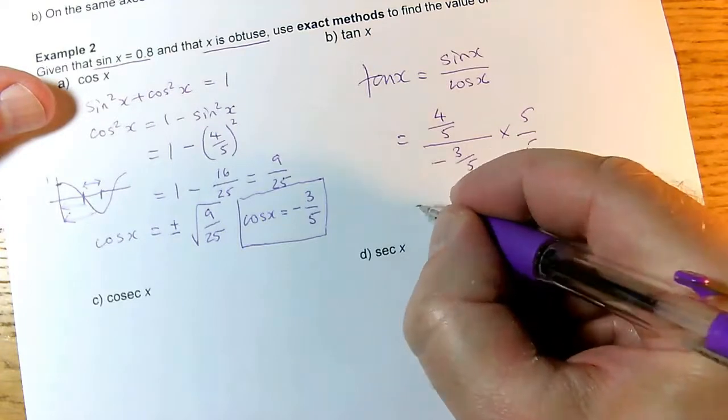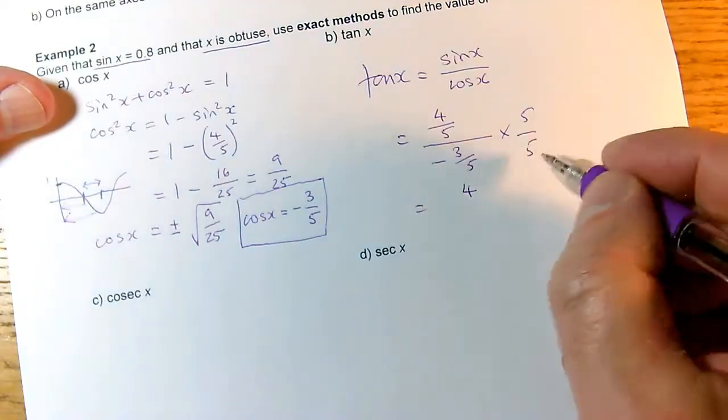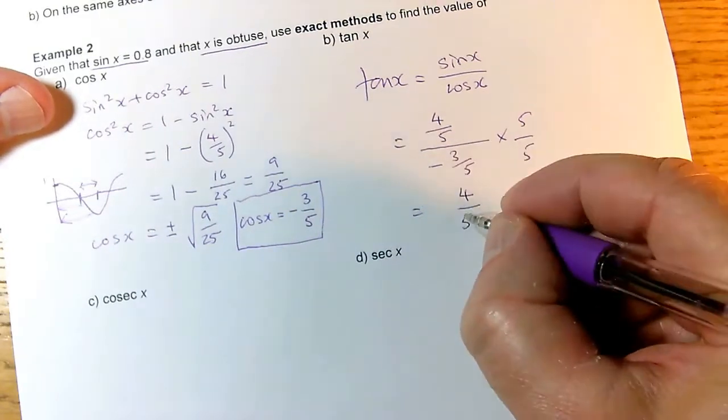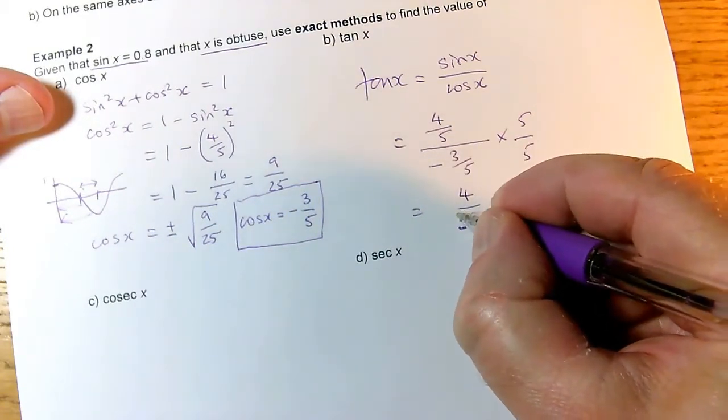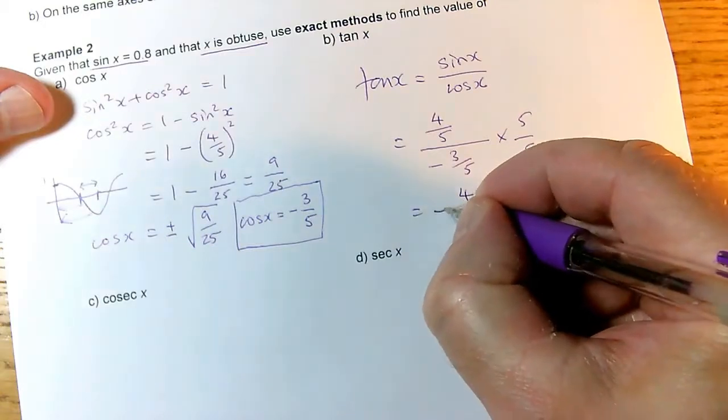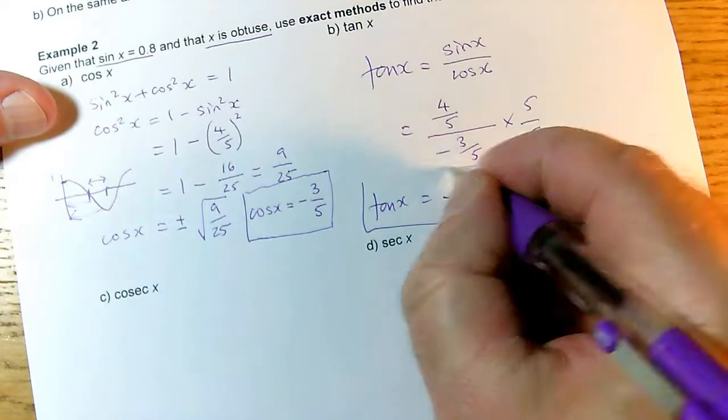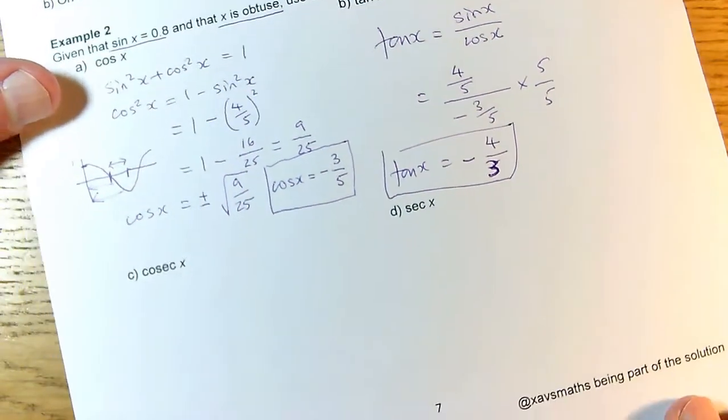4/5 times 5 is 4. And -3/5 times 5 is -3. So this is -4/3, which is my answer for tan x.